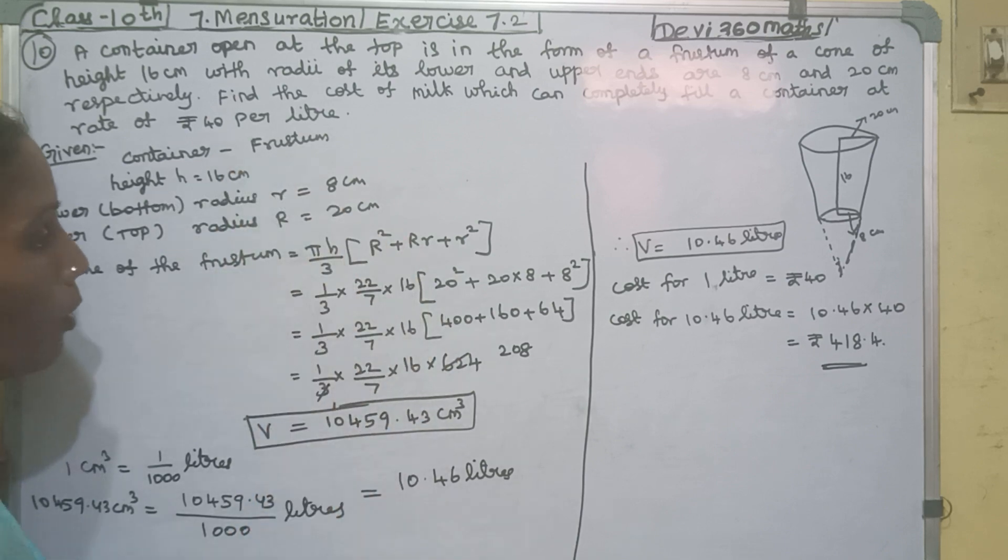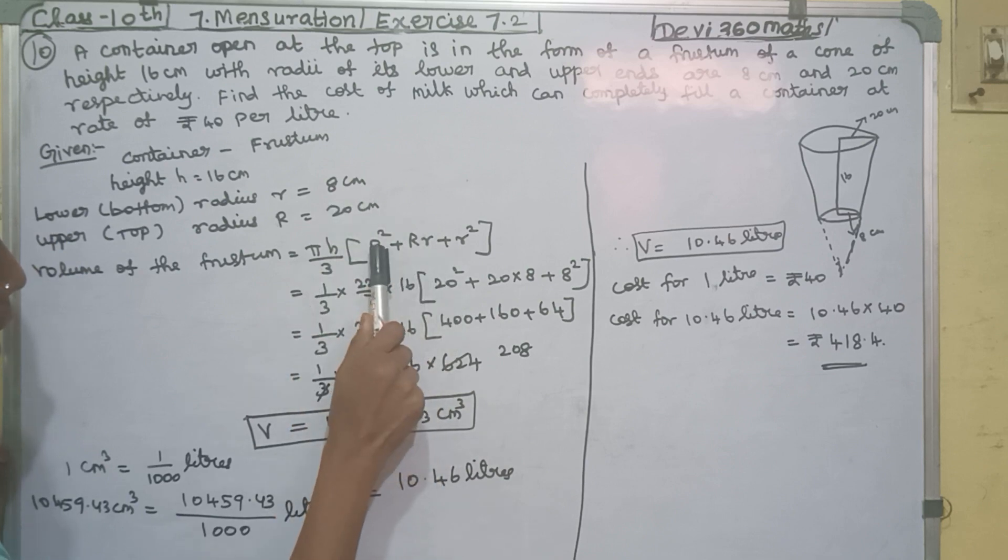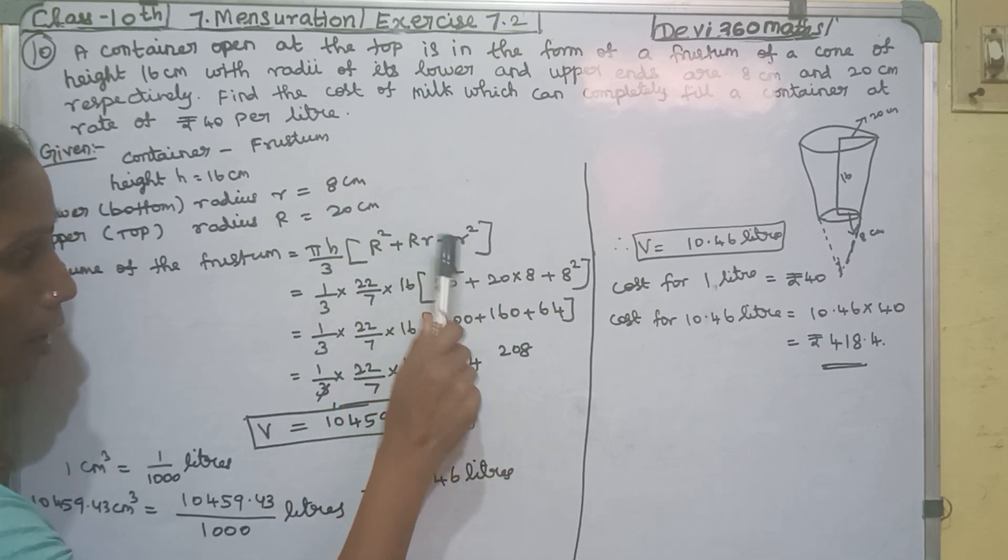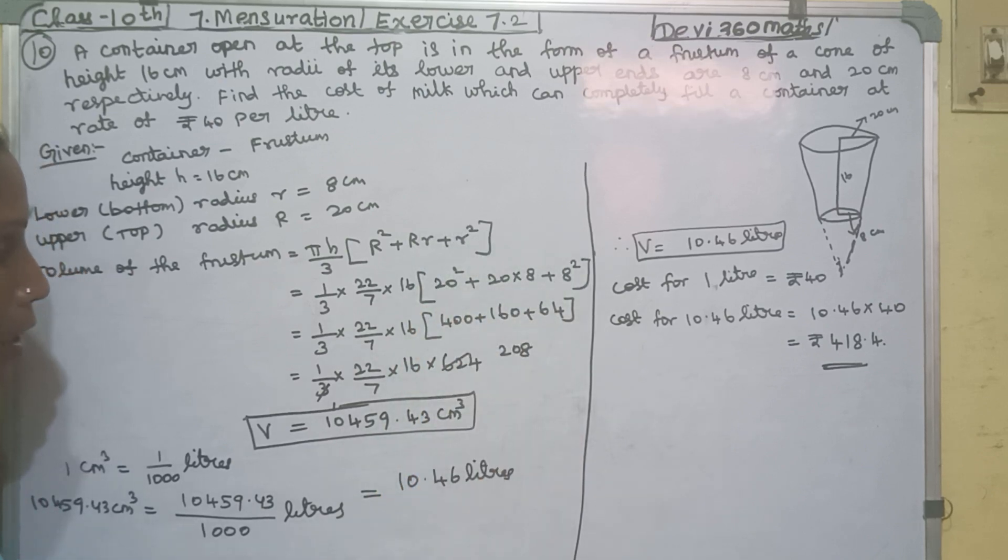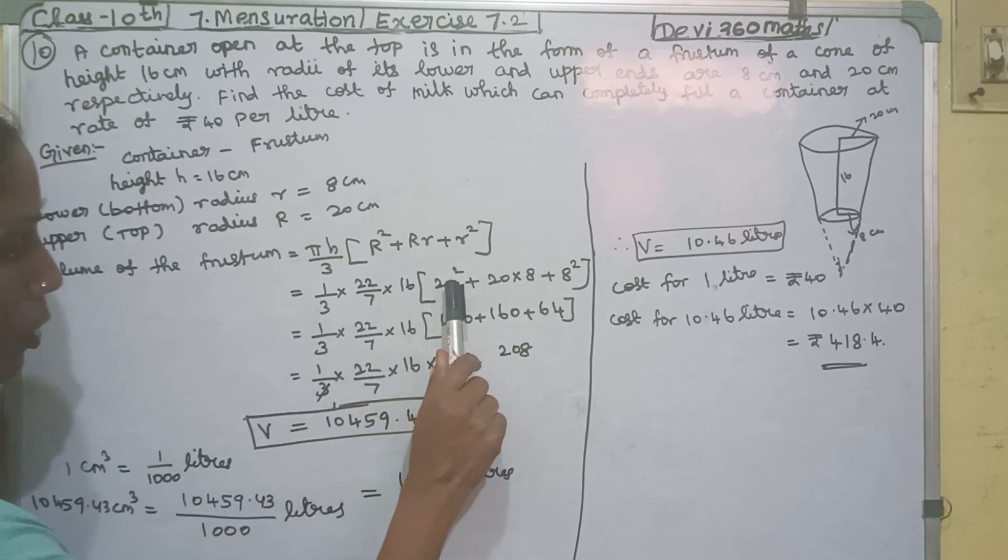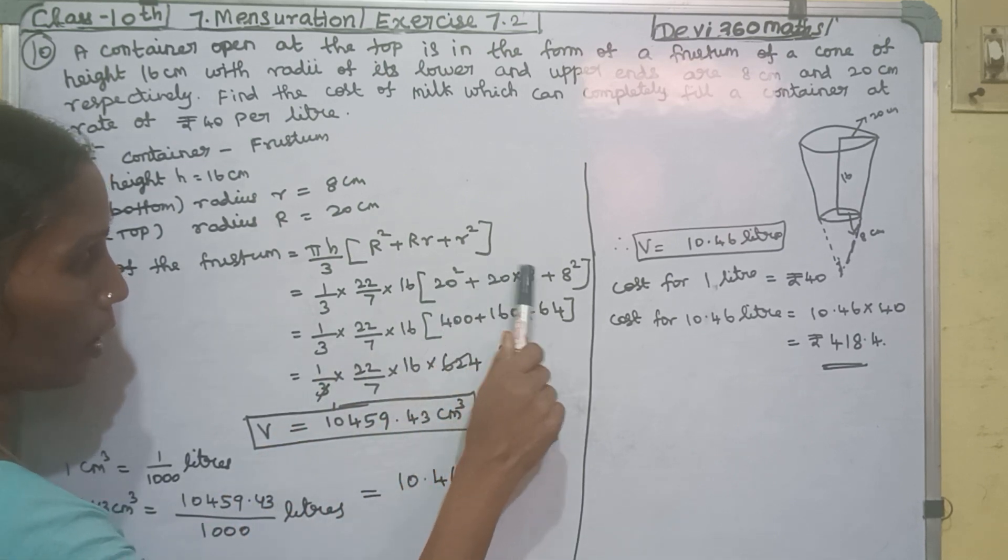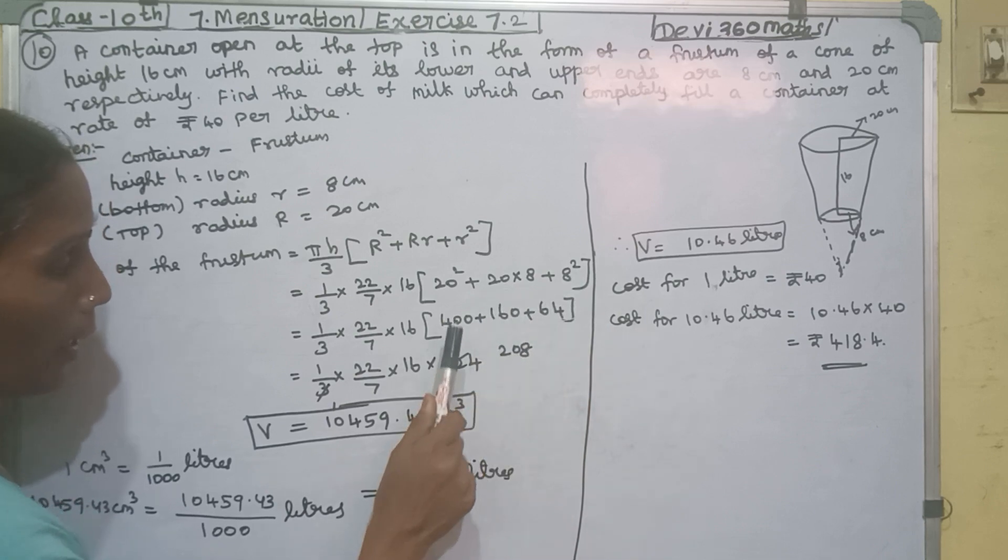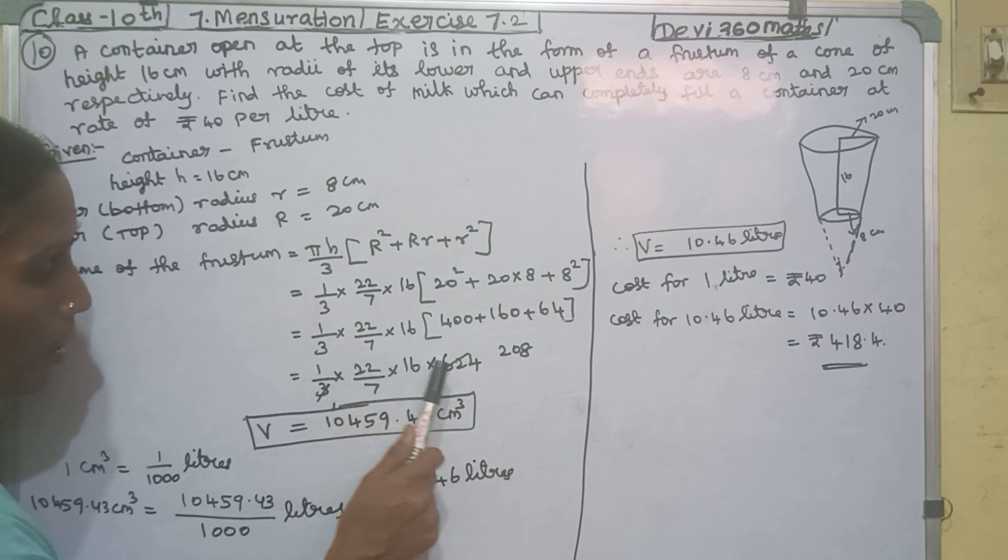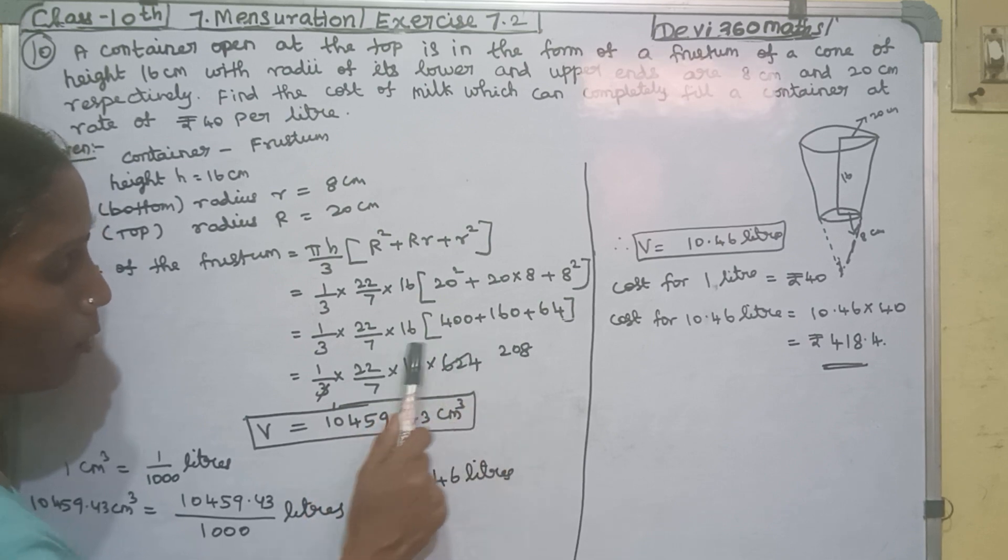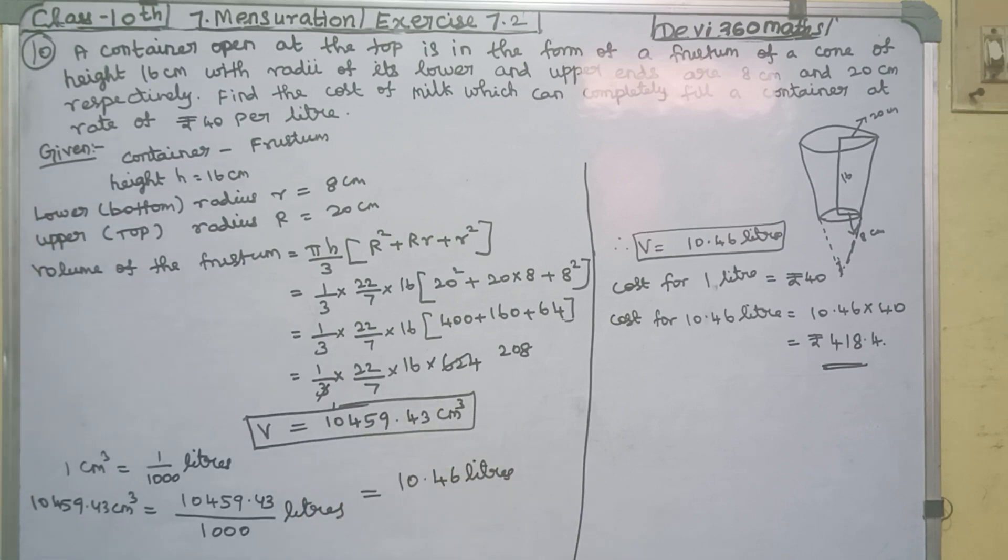Now we have 1 by 3, pi is 22 by 7, h is 16. Capital R is 20, small r is 8. So 1 by 3, 22 by 7, into 16 into (8² plus 8 into 20 plus 20²). After calculation, we get the volume as 10,459.43 cm³.